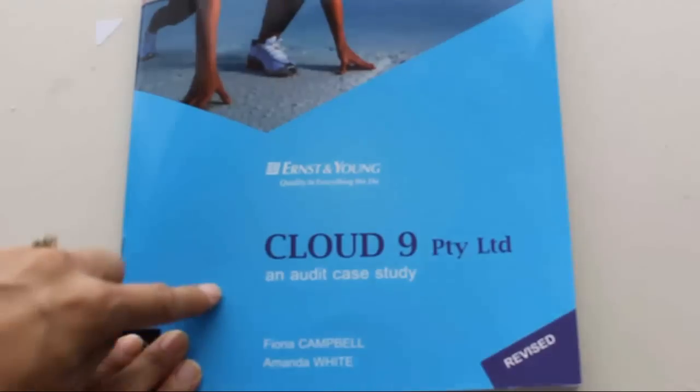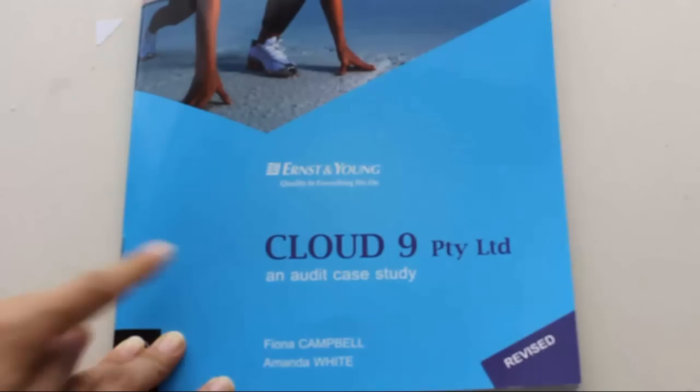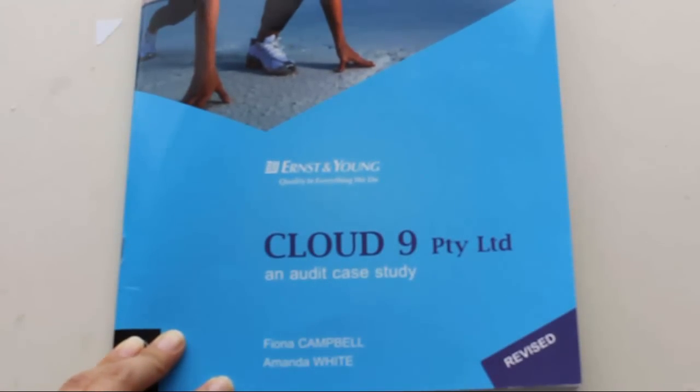So what goes into a work paper? I'm going to use the Cloud9 case study by Campbell and White that we use at UTS to explain what goes into a work paper and the reasons we have those different components. So let's start with, and I'll go to the first assignment.